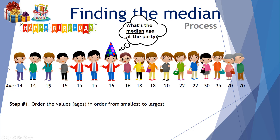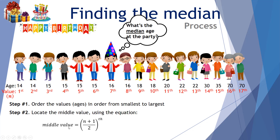James has got his youngest party attendee at 14, going all the way through to his grandparents at 70. Step two: locate the middle value using the equation. The middle value is (n + 1) / 2. Don't get confused — n just represents the number of ages that we have.